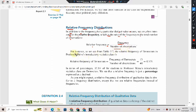For instance, as we see from Table 2.52, the relative frequency of Democrats in this introductory statistics class: relative frequency of Democrats equals frequency of Democrats divided by number of observations, which is 13 divided by 40 equals 0.325. In terms of percentages, 32.5 percent of the students in this introductory statistics class are Democrats. We see that relative frequency is just a percentage.